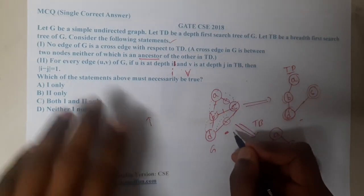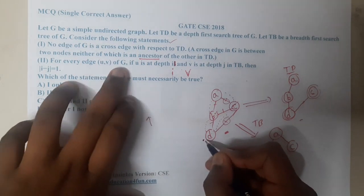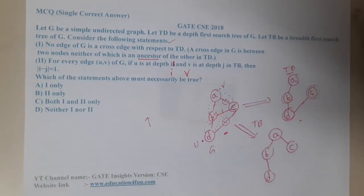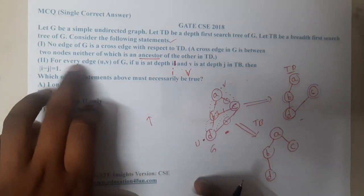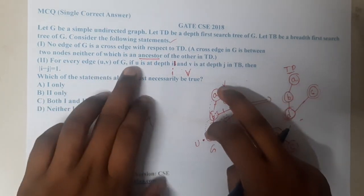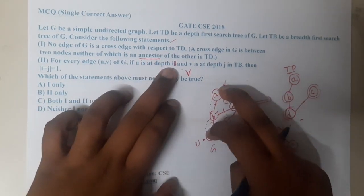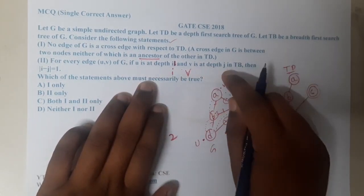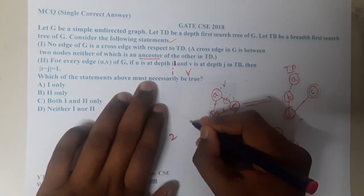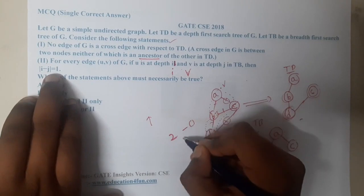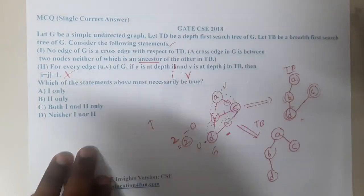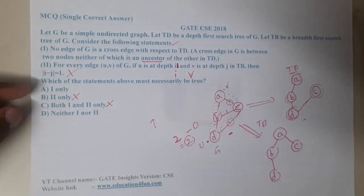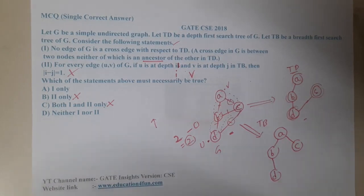We can prove statement two is false. Take U as node C at depth 2 and V as the root node A at depth 0. The difference I − J equals 2, not 1 as the statement claims. Hence option B is wrong, and option C is also wrong. The answer is either A or D.